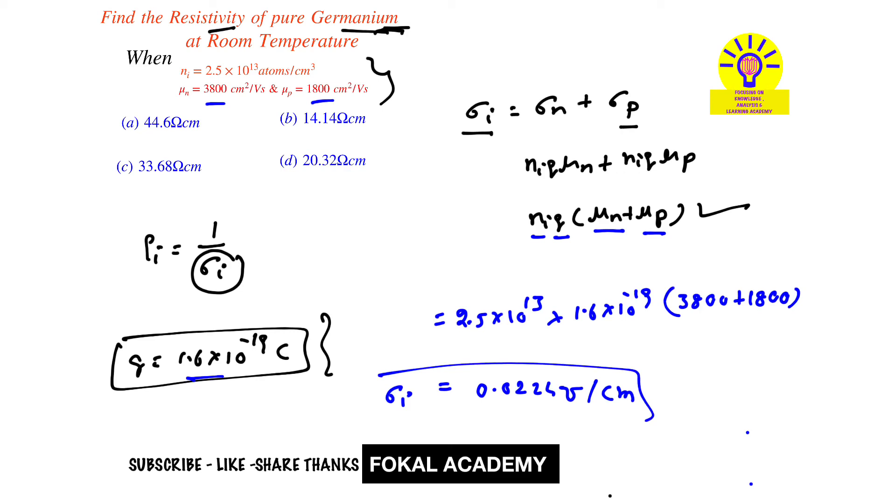But here we want the resistivity, which equals 1 over conductivity. The conductivity is 0.0224 Siemens, so by simplifying this we get 44.6 ohm centimeter.